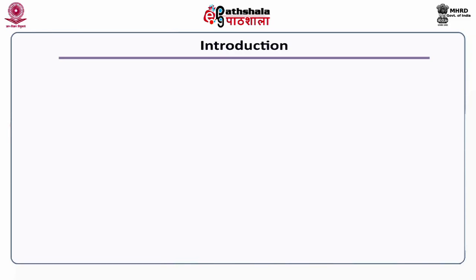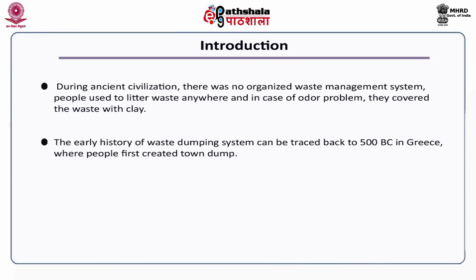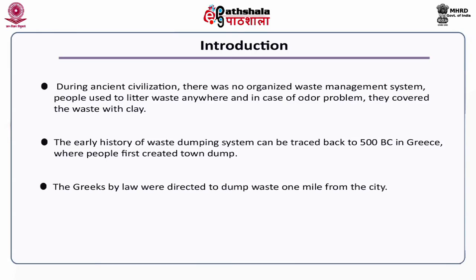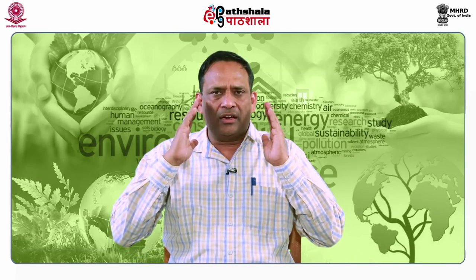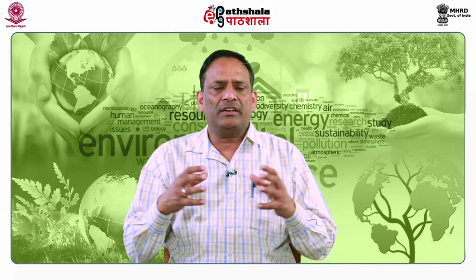During ancient civilization, there was no organized waste management system. People used to litter waste anywhere, and in case of odor problems, they covered the waste with clay or soil. The early history of waste dumping can be traced back to 500 BC in Greece, where people first created a town dump. The Greeks, by law, were directed to dump waste one mile from the city, showing that even our forefathers were concerned about waste disposal.